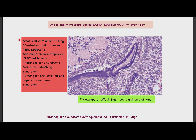Apart from that, if this image comes as a component of a clinical case, we should know about small cell carcinoma of the lung. It is a central or hilar tumor. The IHC markers of small cell are chromogranin, synaptophysin, CD57, and bombesin. Since this is a neuroendocrine tumor, the paraneoplastic syndromes seen in small cell are most commonly SIADH, then Cushing syndrome.